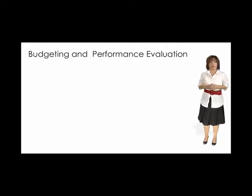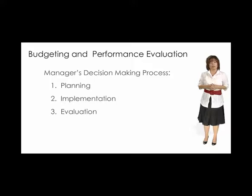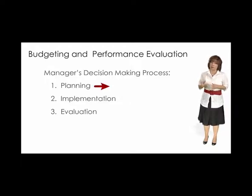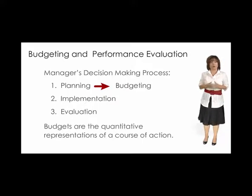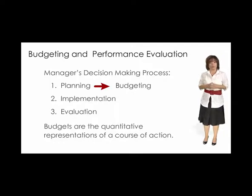Let's start by thinking back to the overview of the managerial accounting module, where we discussed the major activities involved in a manager's decision-making process. Recall that the first activity was planning, and a key component of planning is budgeting. Budgets are the quantitative representations of a course of action. In this module, we are going to discuss the primary budgets of a manufacturing business and the order they need to be prepared.